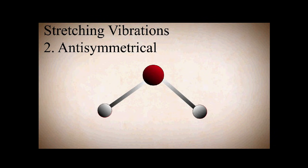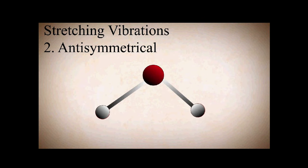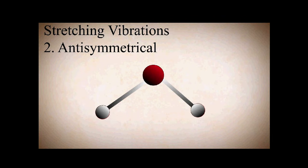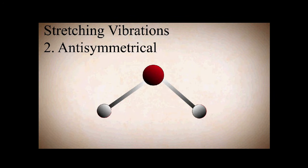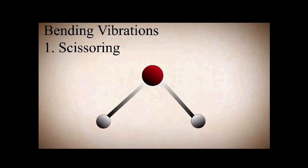The second stretching vibration is anti-symmetrical. Here one atom is going away from the central atom and the other one is going towards the central atom, and vice versa — when the other is going away from the central atom, the first one will go towards it. This means there is again a change in bond length in anti-symmetrical vibrations.